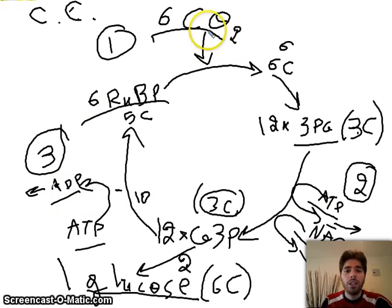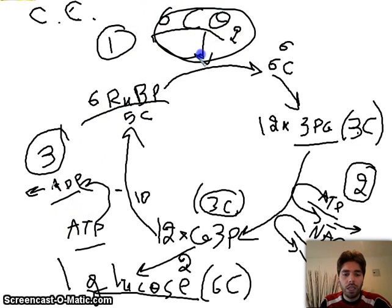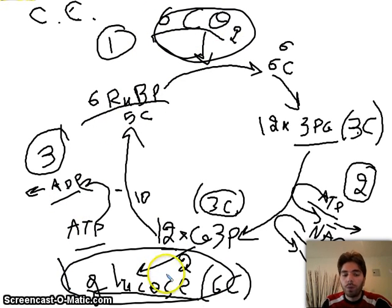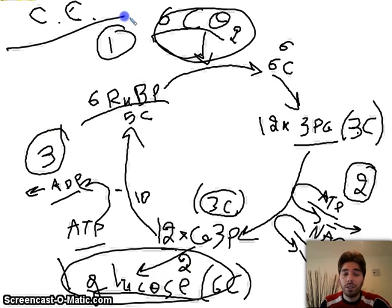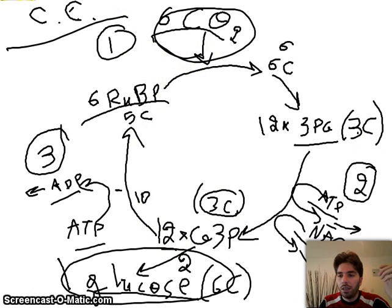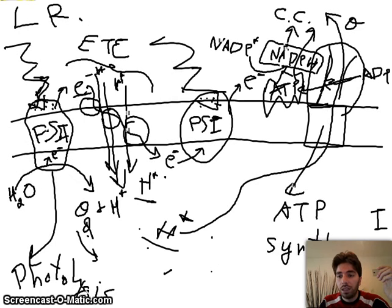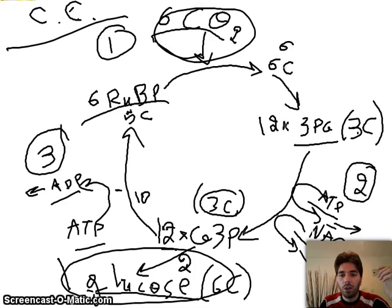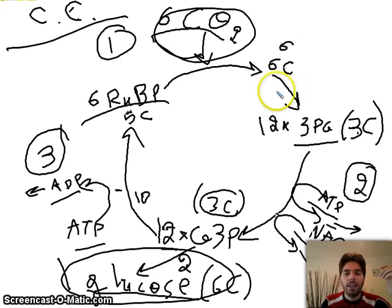We've used CO2 and made glucose, which is the purpose of photosynthesis. This happened in the stroma — this is the Calvin cycle — and together with the light reaction these are the detailed steps. I hope the drawing was helpful and not too messy. Thank you.